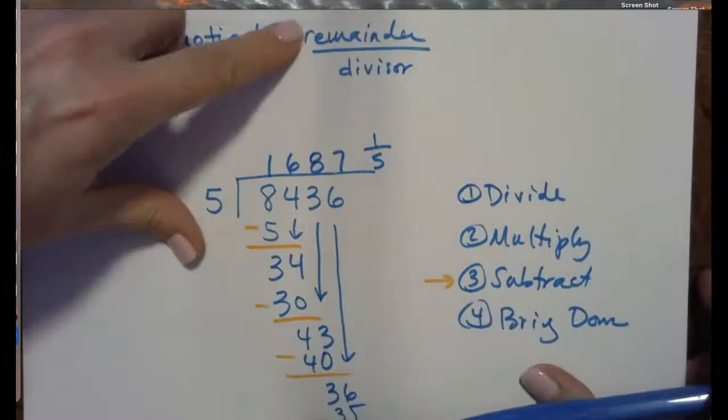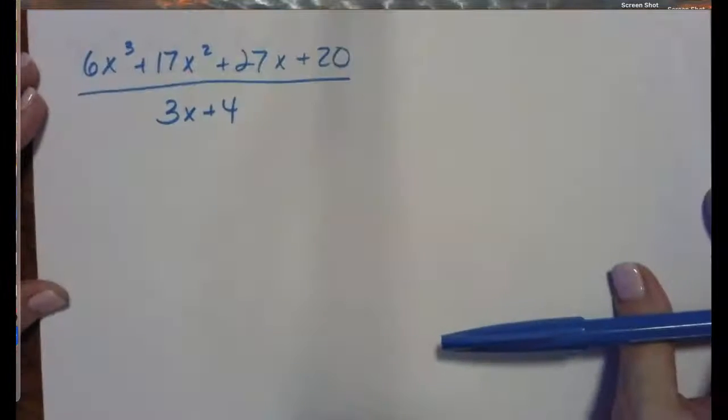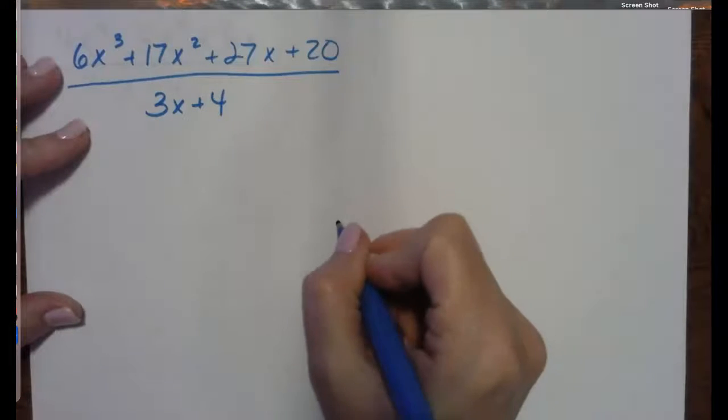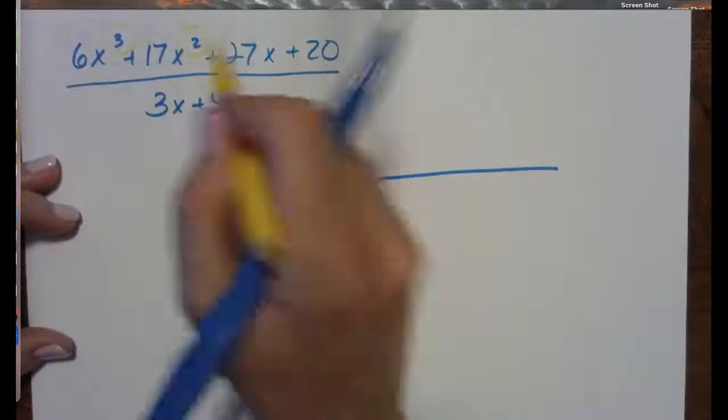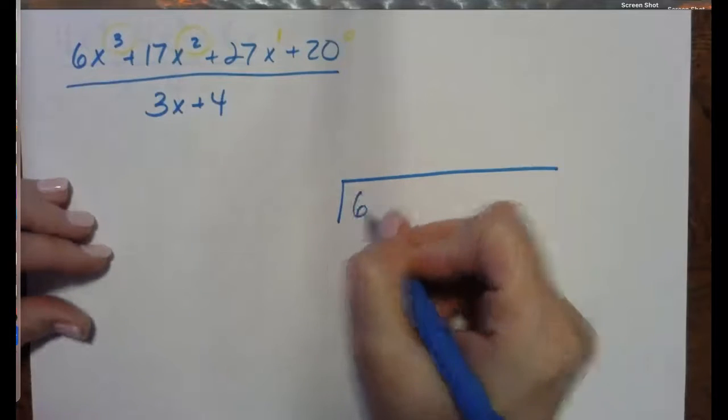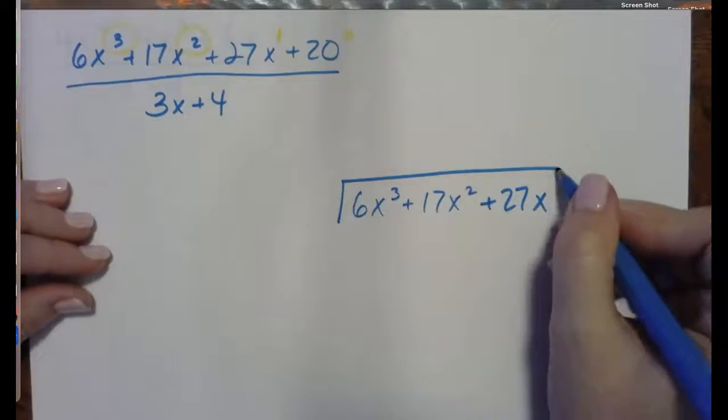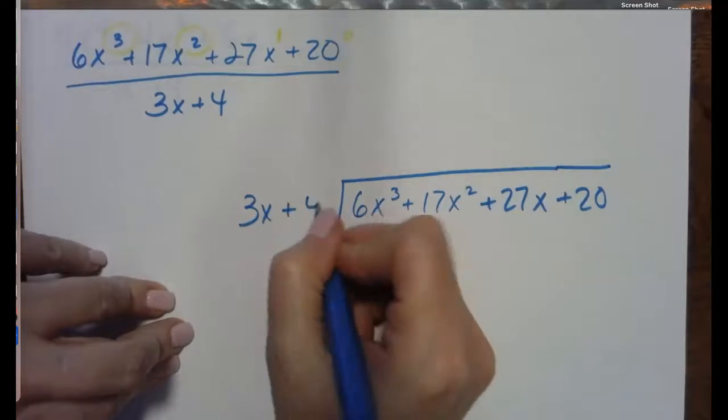Remember, our remainder is always out of our divisor. So we're going to use those same four steps, and we are going to do long division with this polynomial. So the first thing we have to do is get it set up. So the dividend goes underneath the house, and we need every power of x to be represented, and we've got it. 3, 2, 1, and none.